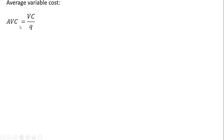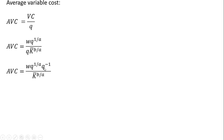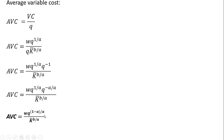Average variable cost: we take our variable cost and divide it through by Q. Taking our variable cost and dividing through by Q, we can simplify the Q terms by bringing the Q from the denominator into the numerator as Q to the minus 1. Q to the minus 1 is the same as minus A divided by A, giving us common-like denominators so we can add up the exponents on the Q term. That gives us average variable cost.